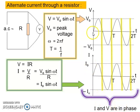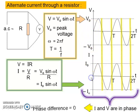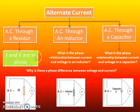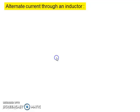They start at the origin, and we can say that their phase difference equals to 0. We've done alternate current through a resistor — we get I and V are in phase. Next we are going to discuss alternate current through an inductor.